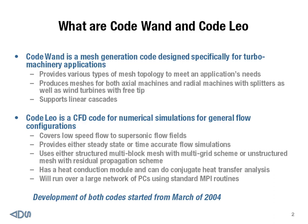Third, Code Leo can do both structured mesh and solve the problem using structured mesh, as well as unstructured mesh. In fact, for a given problem, we can solve a mix of structured mesh and unstructured mesh. One important feature built into the code is the use of a multigrid scheme for multi-block structured mesh for speed of convergence of the flow solution. We can also use a different type of convergence acceleration called residual propagation to speed up the convergence for calculations using unstructured mesh.